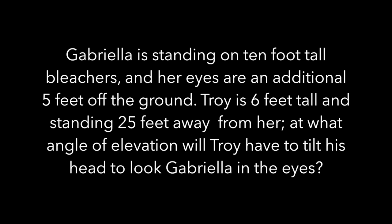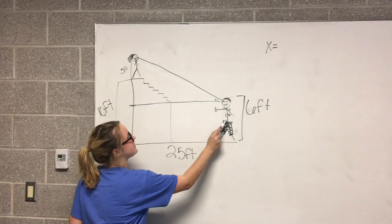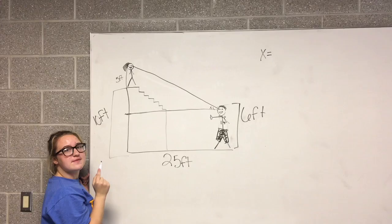If Troy is 6 feet tall and Gabriela is 15 feet up in the air, you have to subtract Troy's height from the total height of Gabriela's eyes to find the height difference, which is 9 feet. This makes one side of your triangle 9 feet and the other side 25 feet.